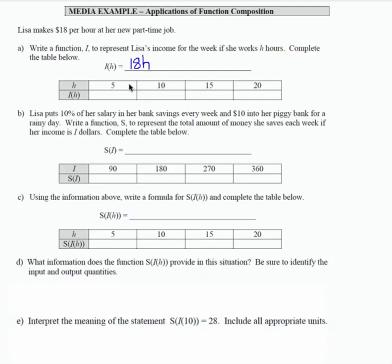If we look at the table below, when the inputs are 5, 10, 15, and 20, we're going to multiply each one of those times 18 to get the corresponding output. So that's going to be 90, which is 5 times 18,